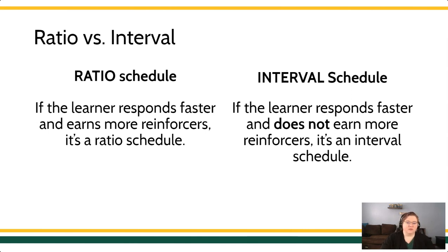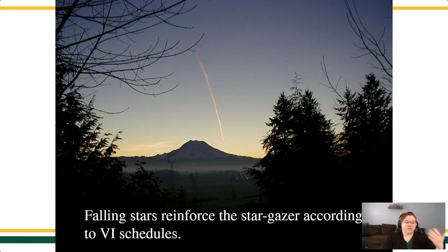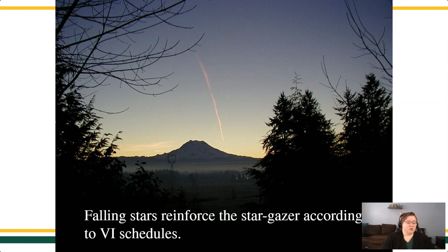A perfect example of an interval-based schedule is a shooting star. If a person is reinforced by finding or seeing shooting stars, it doesn't matter if they look more or look faster. The shooting stars are completely independent — they occur completely independent of whether or not we're looking for them. So there's nothing you can do to make stars fall out of the sky faster.